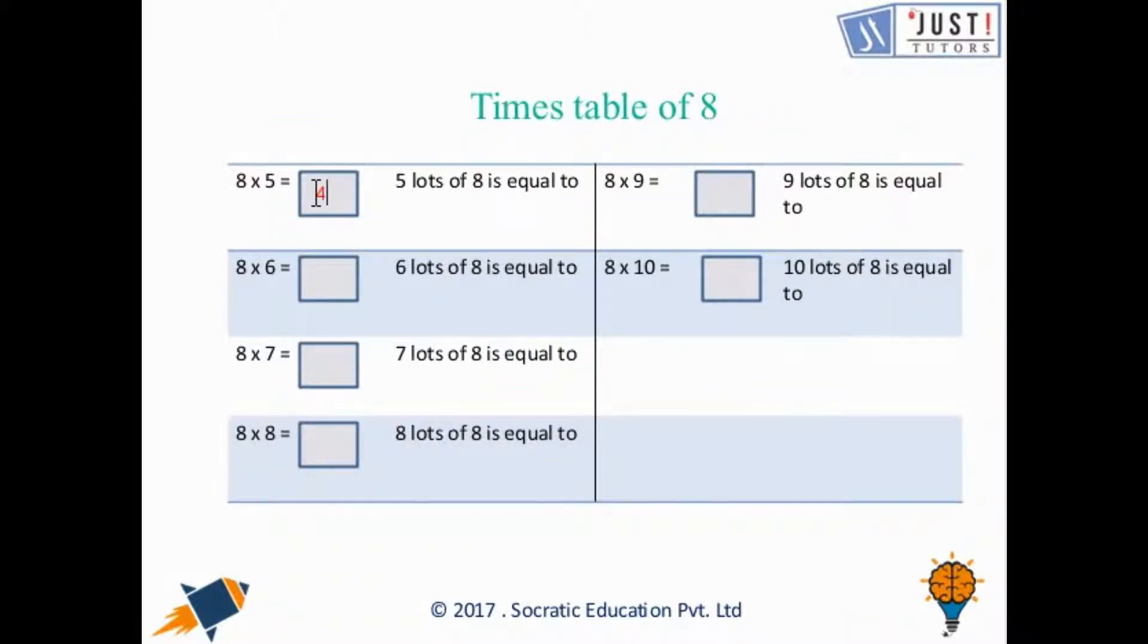Now moving ahead, 8 times 5 will be 40, 8 times 6 will be 48, 8 times 7 will be 56, 8 times 8 will be 64, 8 times 9 will be 72, and 8 times 10 will be 80.